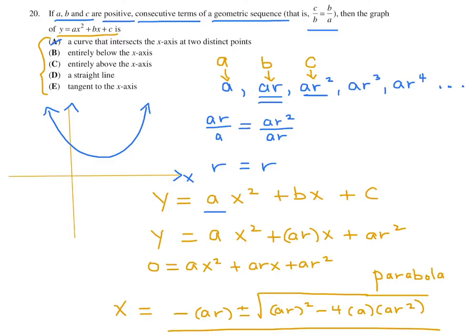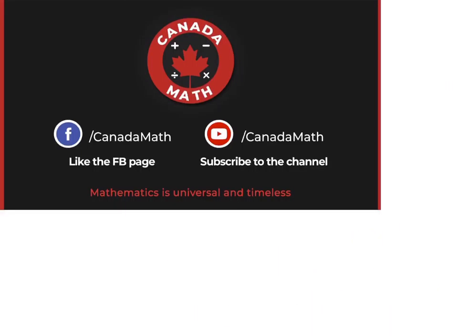A, a curve that intersects the x-axis at two distinct points. Well, we've just shown that that's not possible. It has no real roots. So A is gone. Entirely below the x-axis. Well, that's not true. Entirely above the x-axis. Correct. Let's finish this out. A straight line. Well, it's not a straight line. It's a parabola. Tangent to the x-axis. Tangent to the x-axis would mean like that, that it touches the x-axis at one point. And that's not true. So 20, the answer is C.